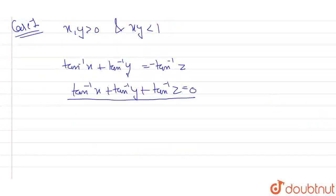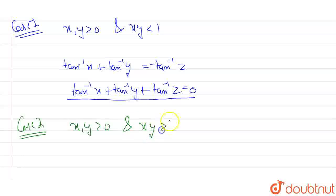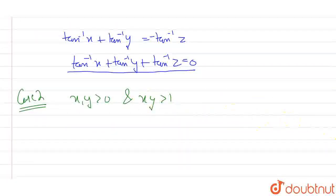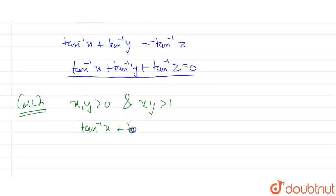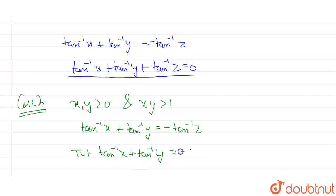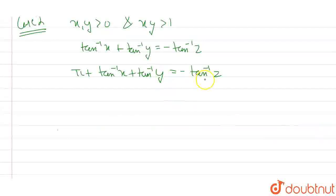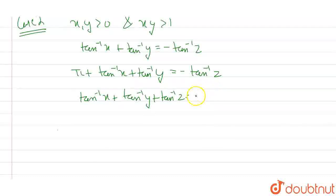In case two, x and y are again greater than zero, but this time the product xy is greater than one. When xy is greater than one, this part becomes negative, so a pi must be added. We get: pi plus tan inverse x plus tan inverse y equals minus tan inverse z. Moving terms to the right-hand side: tan inverse x plus tan inverse y plus tan inverse z equals minus pi.